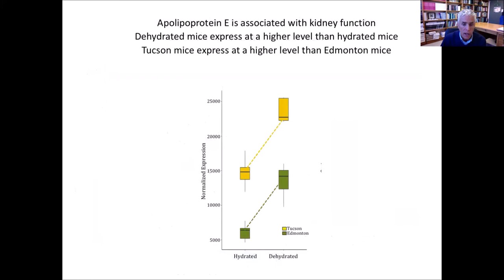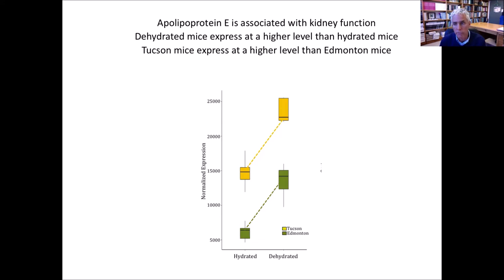An example of one of those genes: apolipoprotein E, known to be importantly associated with kidney function. In a hydrated environment, Tucson mice express it at a higher level than Edmonton mice. Both kinds of mice turn up expression of this gene when dehydrated, and in Edmonton mice they turn it up to basically the baseline level seen in Tucson mice. We think this is a key gene associated with adaptation to a very dry environment, identified by comparing patterns of expression plasticity with patterns of expression evolution.